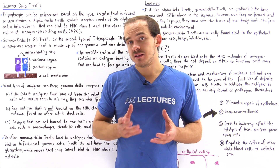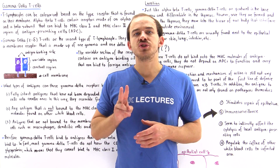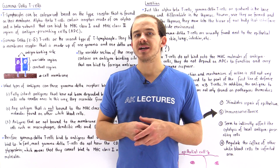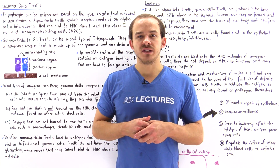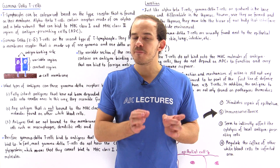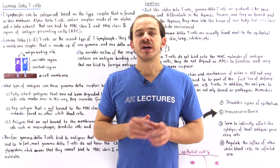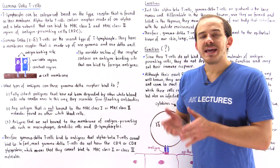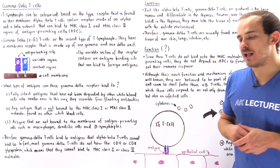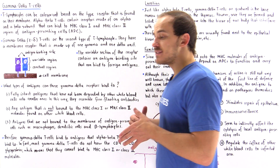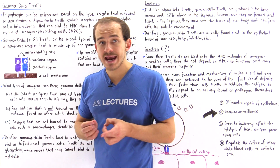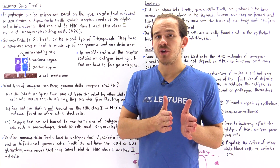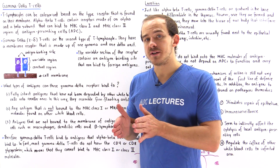In our discussion on T lymphocytes, we mentioned that there are two different types of T lymphocytes, and we can categorize these two different types based on the type of membrane receptor that they have. One type is the alpha-beta T cell, which contains a T cell receptor that has an alpha subunit and a beta subunit.